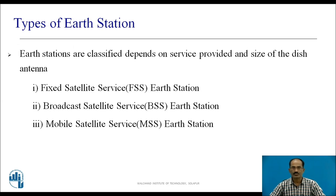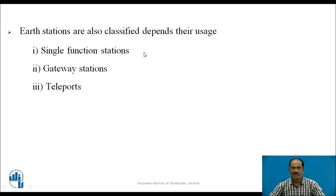Earth Stations can be classified based on the size of the antenna and the service provided. Based on size and service, there are three types: Fixed Satellite Service Earth Station, Broadcast Satellite Service Earth Station, and Mobile Satellite Service Earth Station. Based on usage, Earth Stations are classified as single function stations, gateway stations, and teleports. These classifications will be discussed in further detail later.